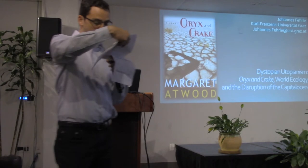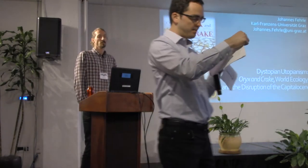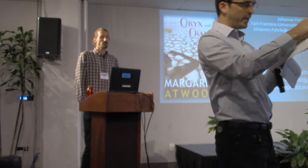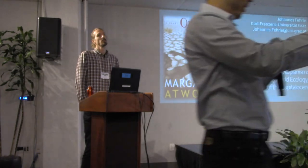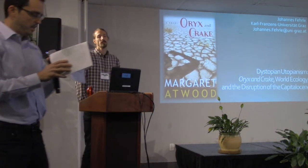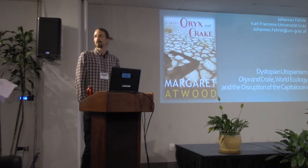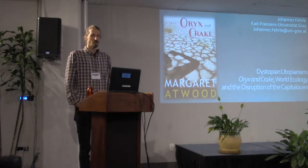The title of the panel is 'Cracks in the Ice: Justice and the State Over the Long Direct.' We have three presenters. We're going to start with Johannes Furler, presenting 'Dystopian Eutropianism.'